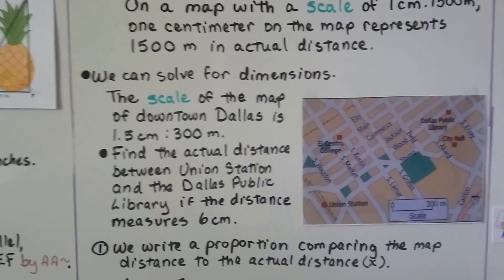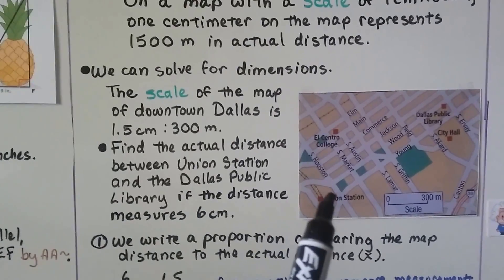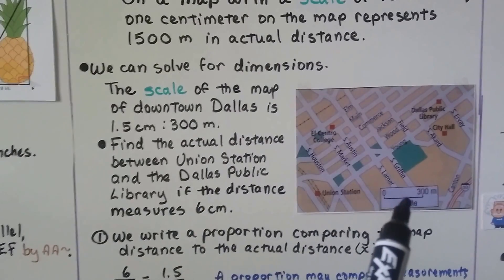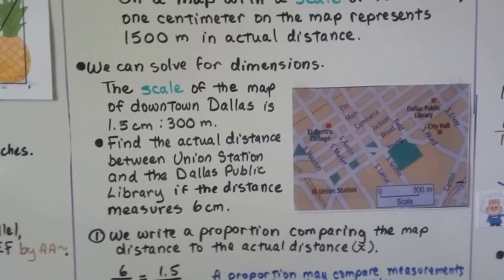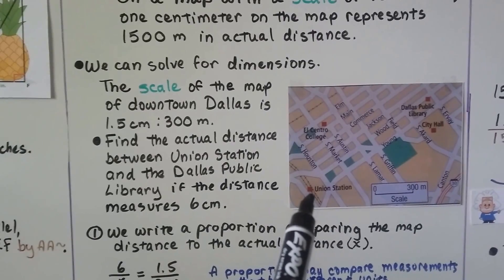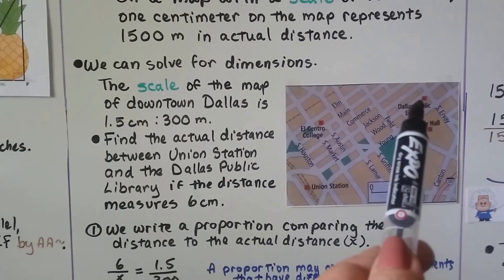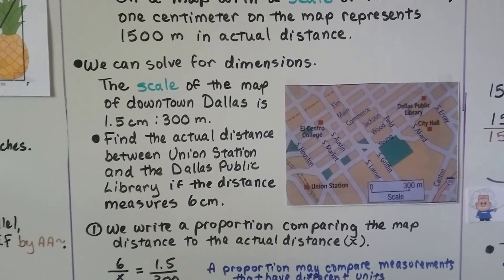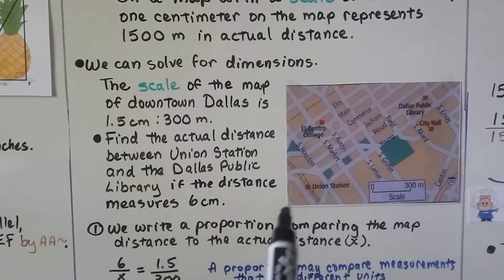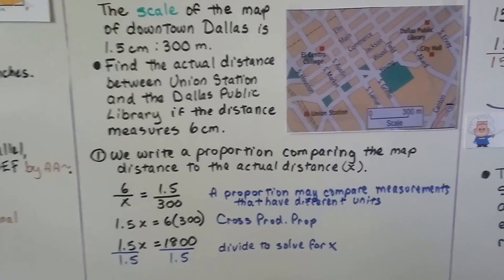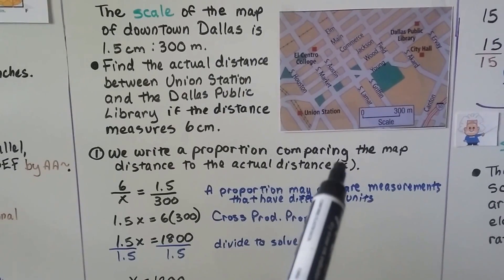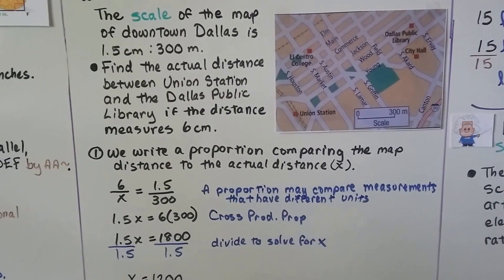The scale of the map of downtown Dallas is 1.5 centimeters to 300 meters. Find the actual distance between Union Station here and the Dallas Public Library up here if the distance measures 6 centimeters on the map. We write a proportion comparing the map distance to the actual distance which we'll call X. That's the actual distance.